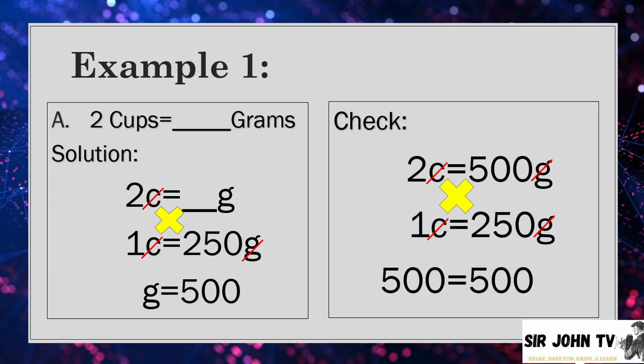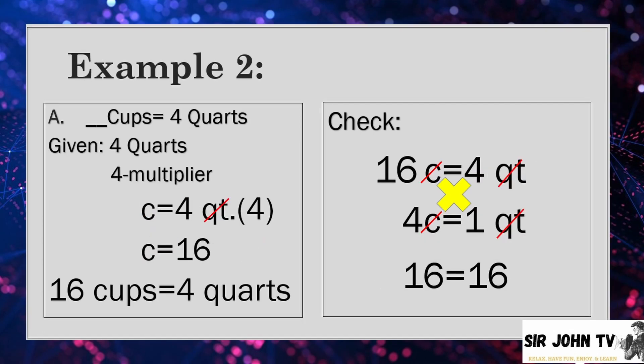1 times g is equal to g, while 2 times 250 is equal to 500. Let us check if our answer is correct. To check, we will just substitute using this solution. We will copy the 2 cups equals blank grams and 1 cup equals 250 grams. We will substitute the 500 grams. And let's proceed with our cross multiplication. Using our conversion using grams. Cross multiply, the same method. Cancel the grams. And the result, if it resulted with the same product, then your answer is correct.